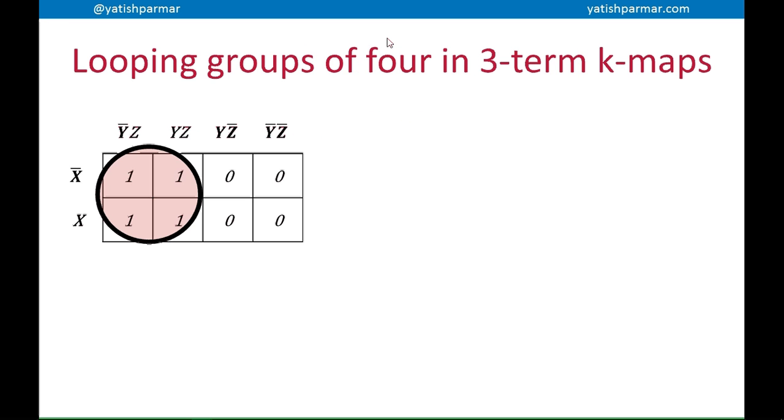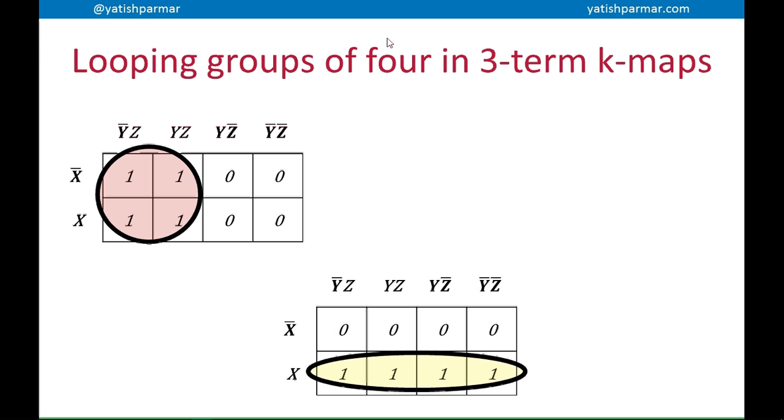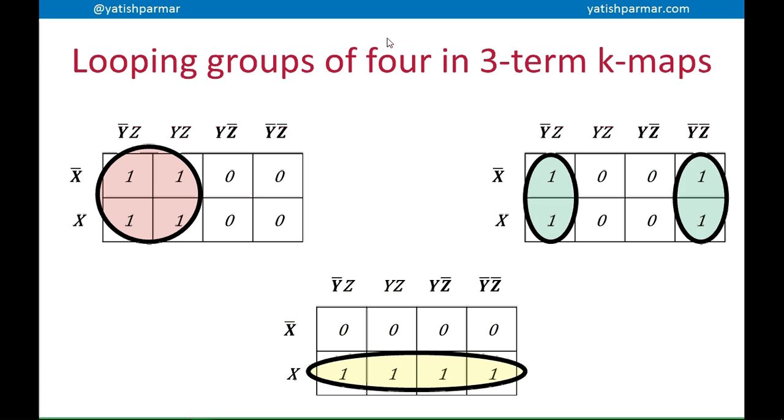So when you need to loop for groups of four in three term K-maps, you can loop for groups of four like the pink loop there, like the yellow loop there at the bottom. Or as I said before, you can roll over the edge of the K-map and back onto the other side. So that's also a group of four. Pairs can overlap with groups of four as well. That's not a problem.